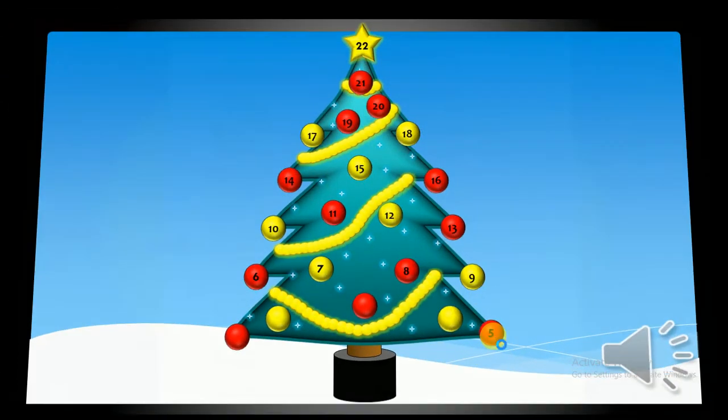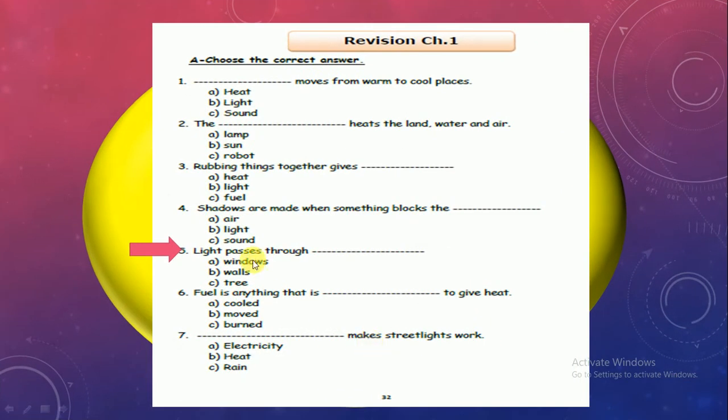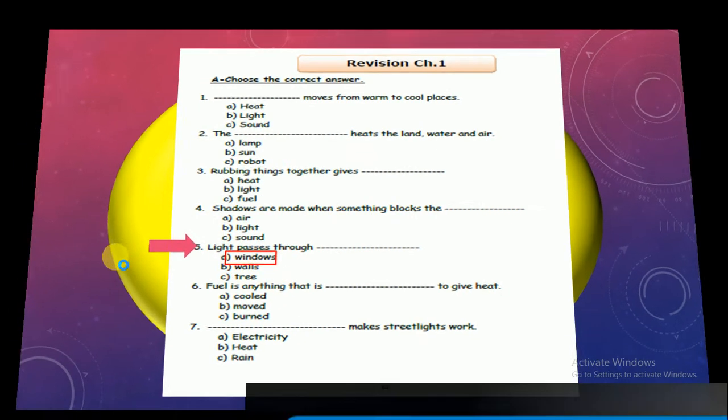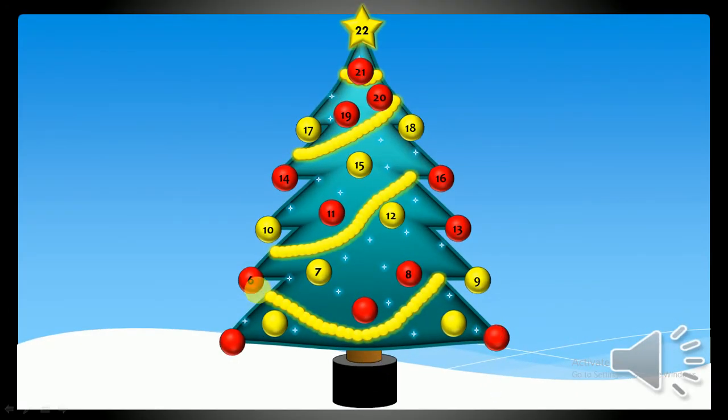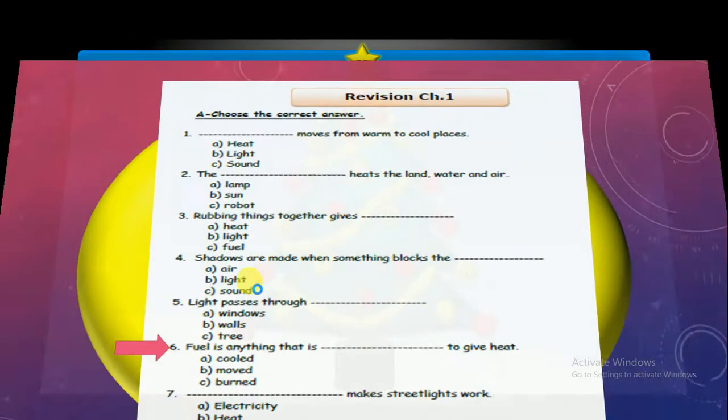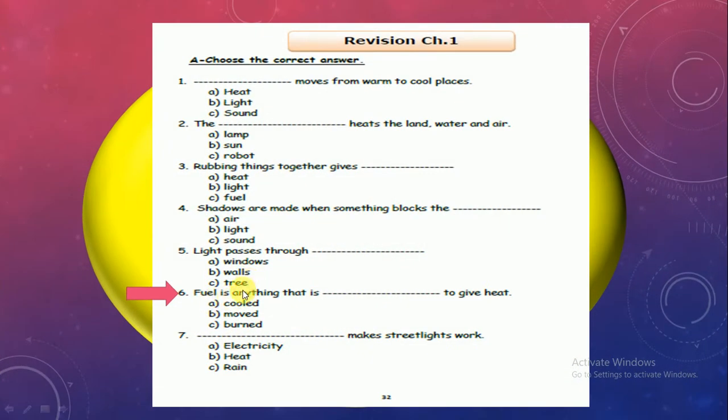Okay, number 5. Light passes through what? Windows, walls or tree. Windows, good job. Number 6. Fuel is anything that is what to give heat. Cold, moved or burned. Burned, excellent. Burned to give heat.